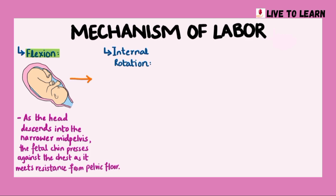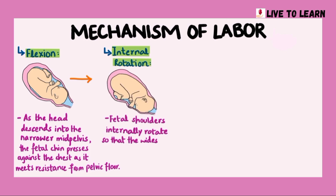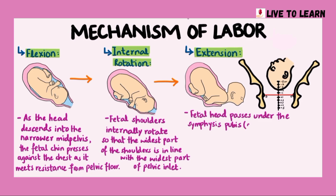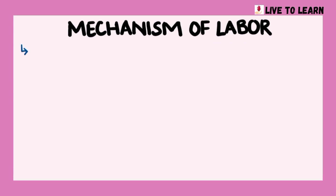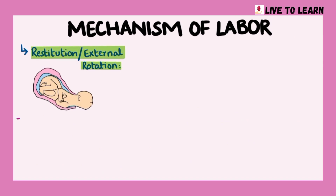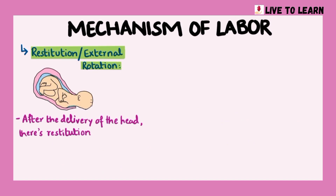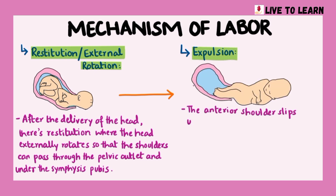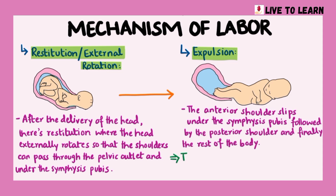Flexion is followed by internal rotation of the fetal shoulders, so that the widest part of the shoulders is in line with the widest part of the pelvic inlet. After the fetal head passes under the symphysis pubis at plus 4 station, extension occurs. The head then moves to about plus 5 station and emerges from the vagina. After the delivery of the head, there is restitution, where the head externally rotates so that the shoulders can pass through the pelvic outlet and under the symphysis pubis. After restitution comes expulsion, in which the anterior shoulder slips under the symphysis pubis, followed by the posterior shoulder and finally the rest of the body. This marks the end of the second stage of labor.